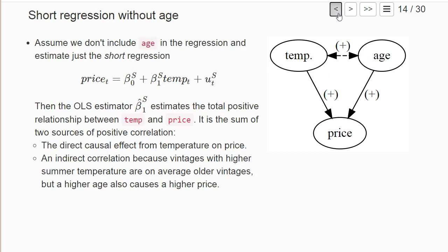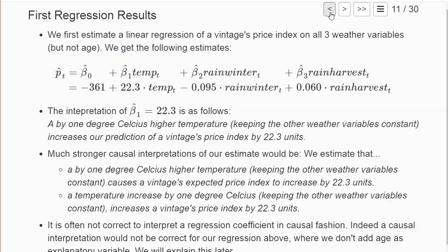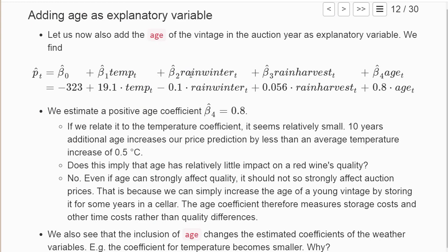That's actually what we observed in our model where we added weather variables. This is the short regression where we don't control for h, and we find a larger coefficient of 22.3 in front of temperature. But this estimate is systematically larger than the causal effect from temperature on price because it also captures this indirect effect—higher temperatures were positively correlated with higher h.